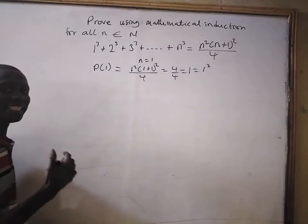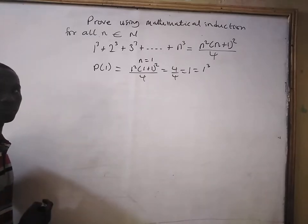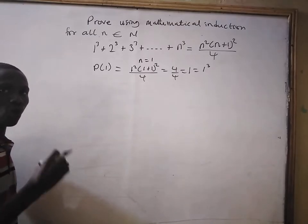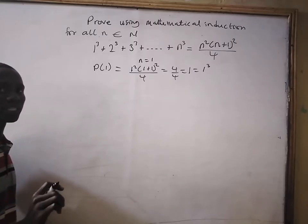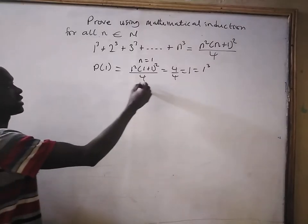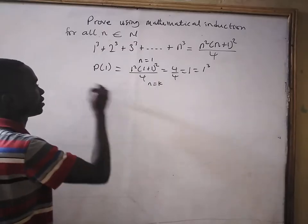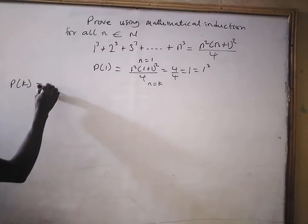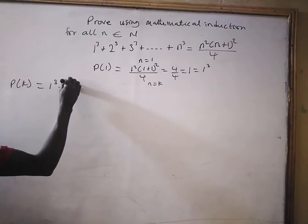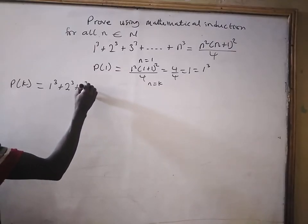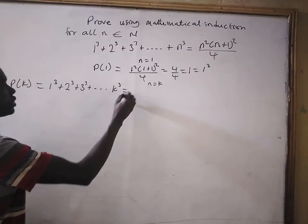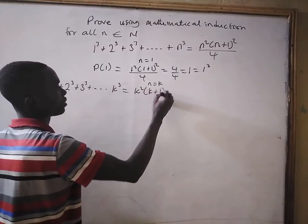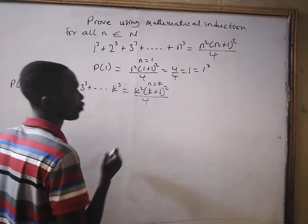Now we move to the inductive hypothesis step. That is, if we assume P(n) is true for all n in the subset of natural numbers, and we represent n by k, we are going to have P(k): 1³ plus 2³ plus 3³ plus dot dot dot plus k³ equals k squared times bracket k plus 1 all squared divided by 4.